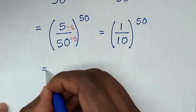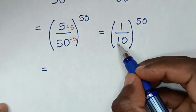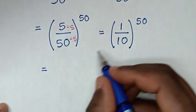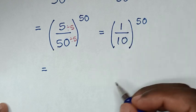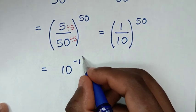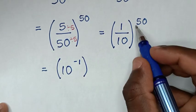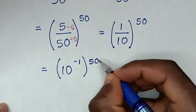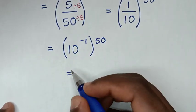Then in the next step it will be equal to 10 to the power of negative 1 times 50 is negative 50.